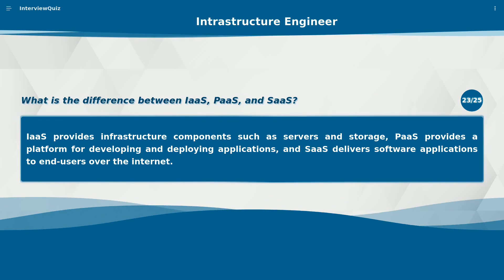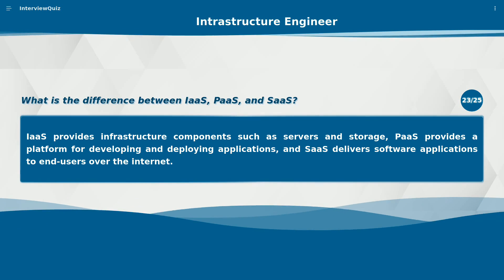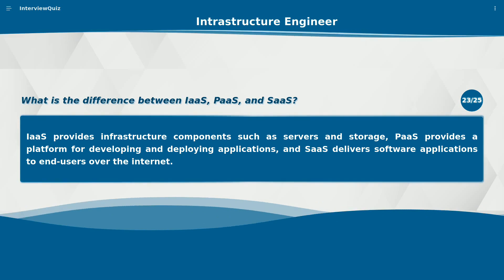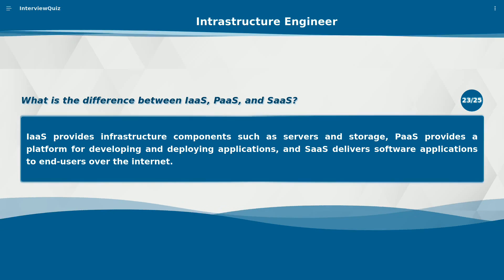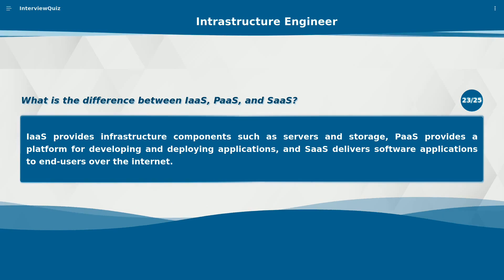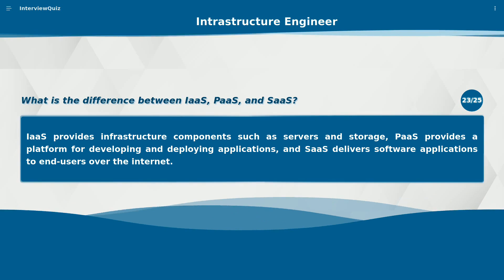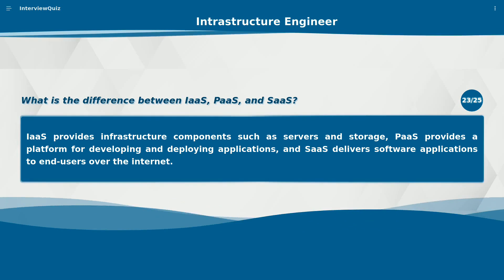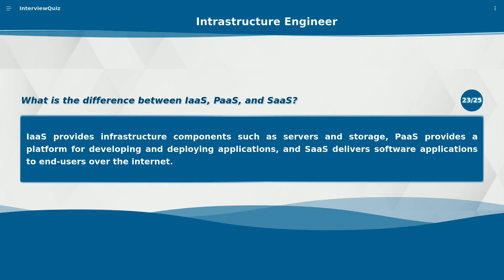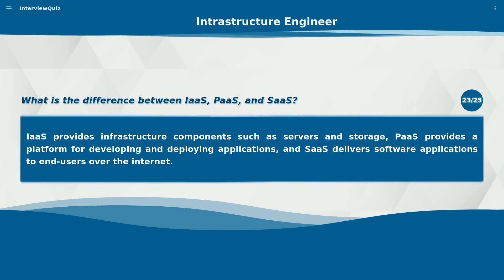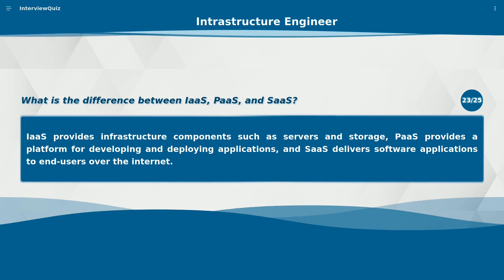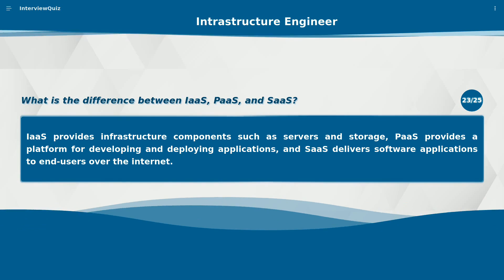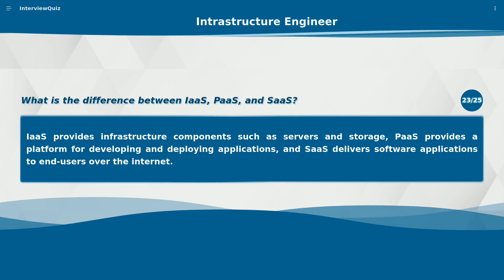What is the difference between IaaS, PaaS, and SaaS? IaaS provides infrastructure components such as servers and storage, PaaS provides a platform for developing and deploying applications, and SaaS delivers software applications to end users over the internet.